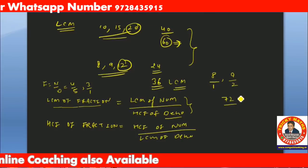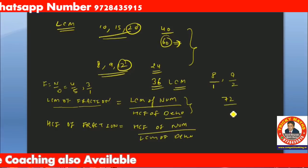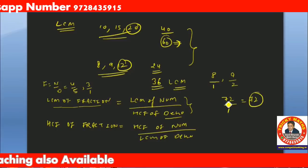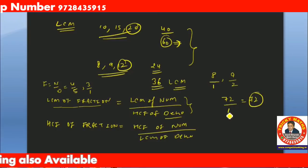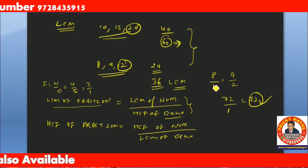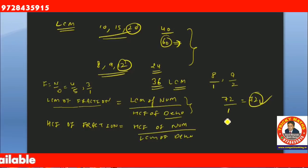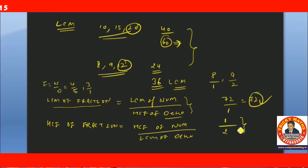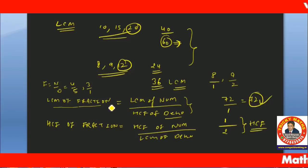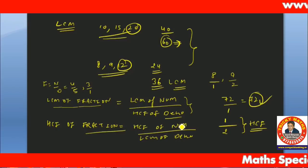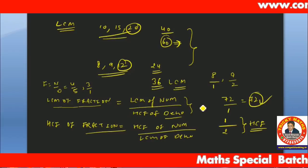See one example: find the LCM of 8 and 9/2. LCM of numerators 8 and 9 is 72. HCF of denominators 1 and 2: highest common factor of 1 and 2 is 1. So LCM of the fraction = 72/1 = 72. If we need HCF: HCF of 8 and 9 is 1, LCM of 1 and 2 is 2, so HCF = 1/2. This will be very useful in all questions of time and work.